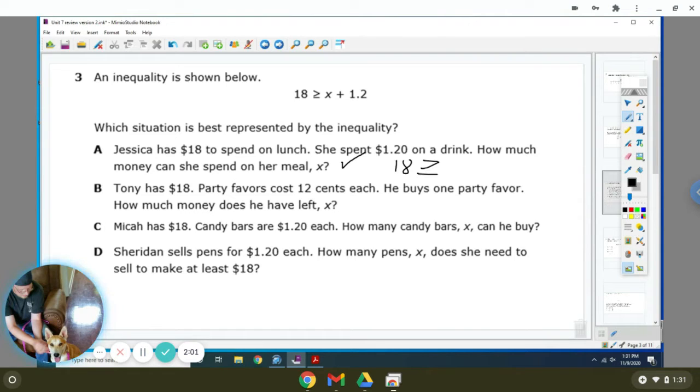You don't know how much she spent on her meal, but she did spend $1.20 on her drink. Tony has $18. Party favors cost 12 cents each. He can buy one party favor. How much does he have left? So $18 is the same thing, plus how much money does he have left, plus the 12 cents. But 12 cents is .12, not 1.2.